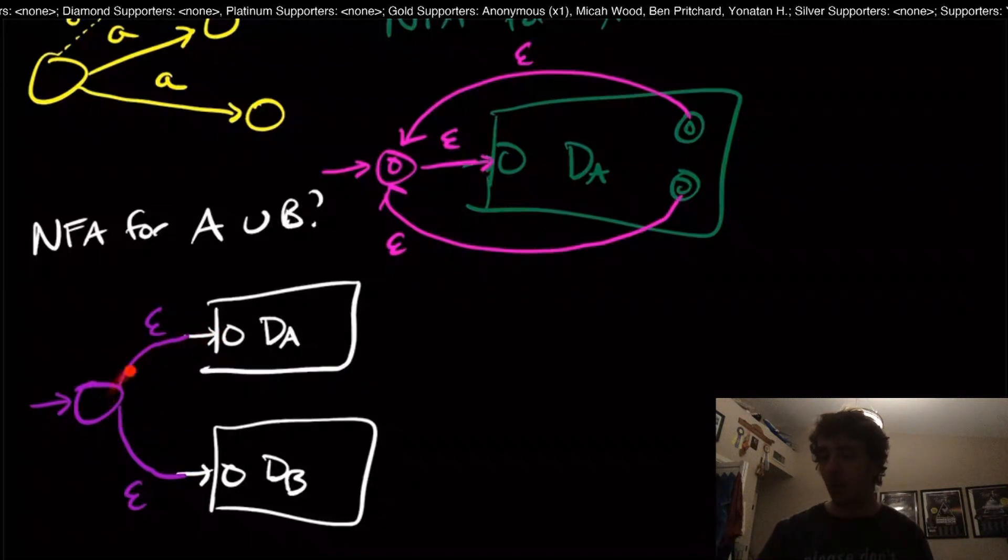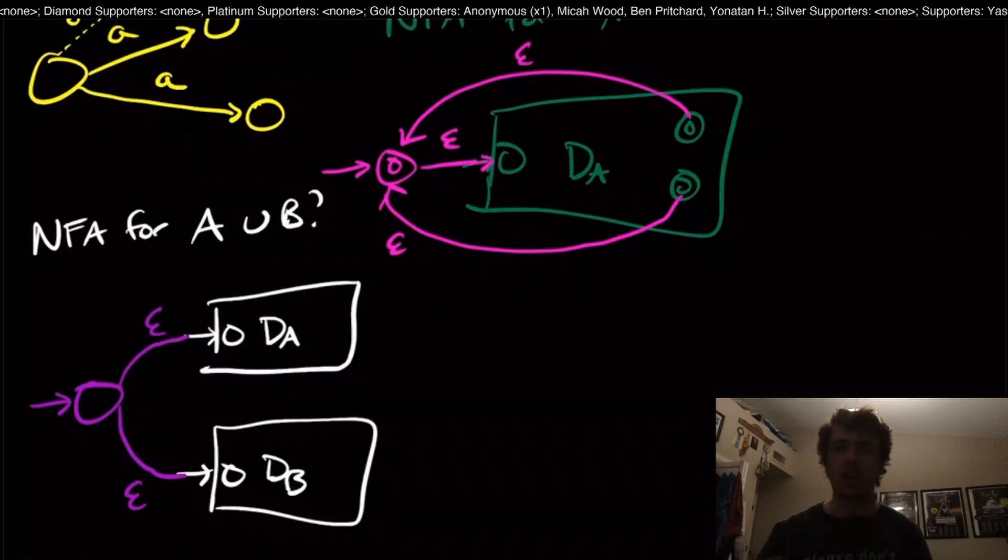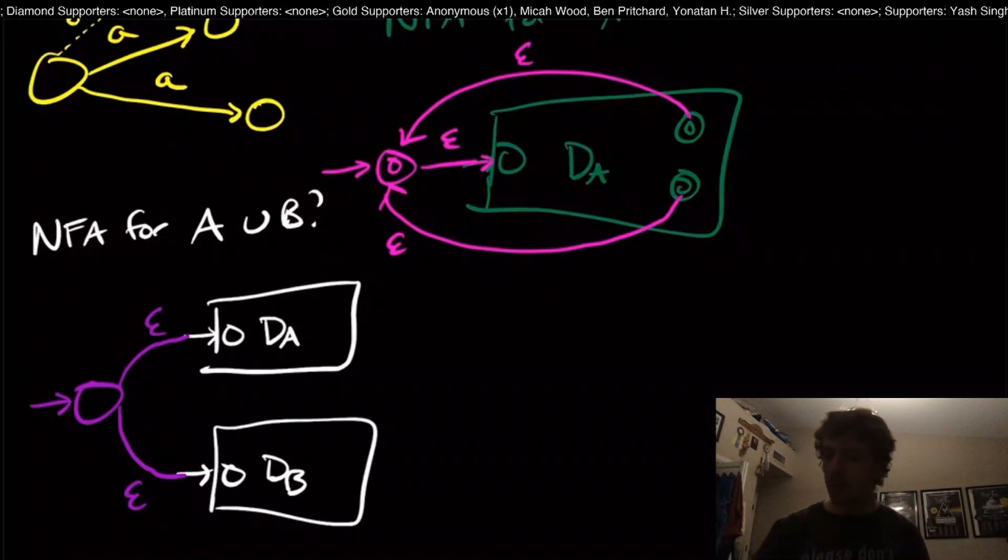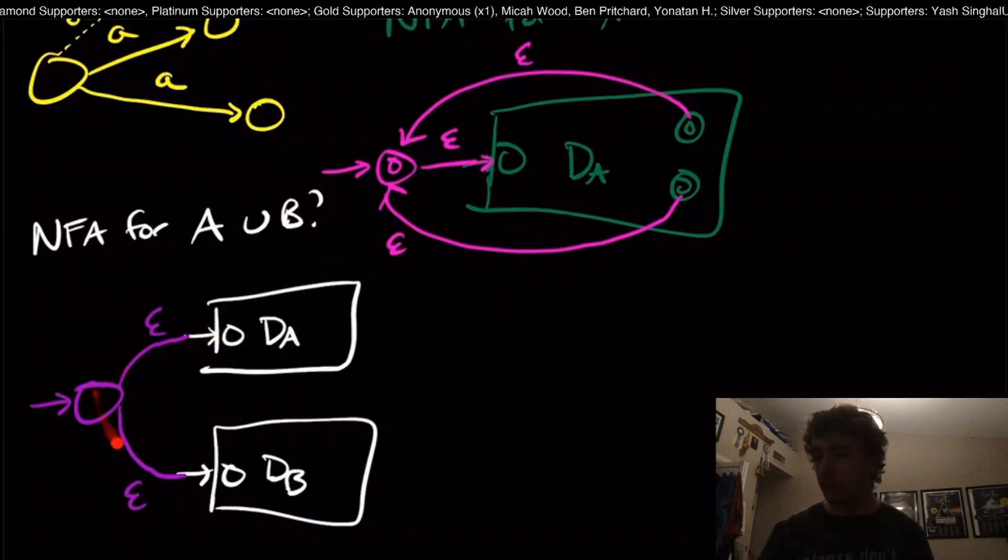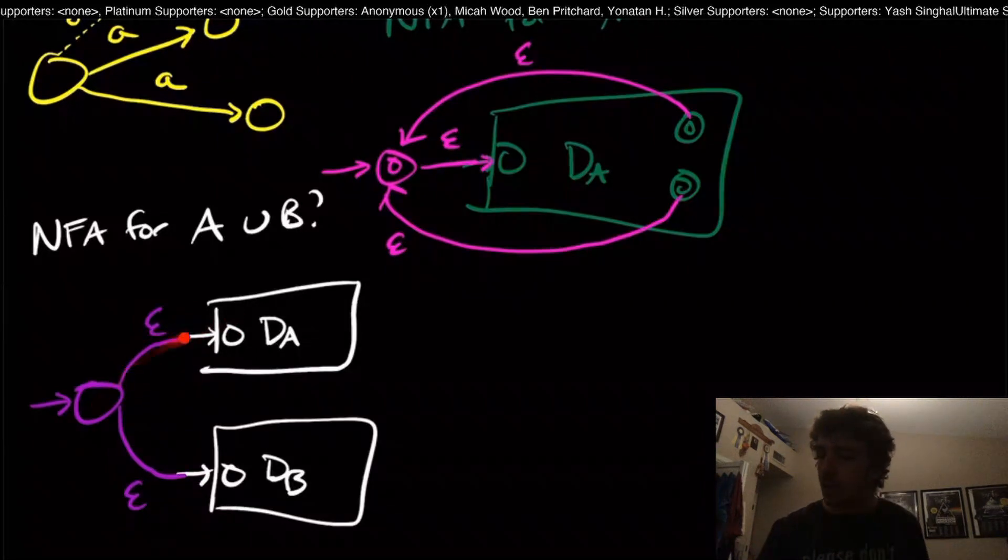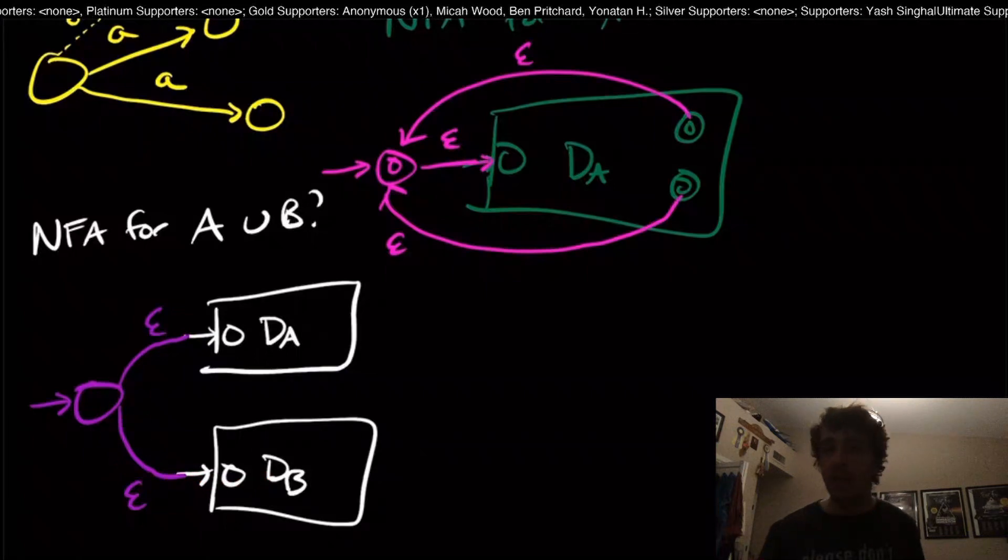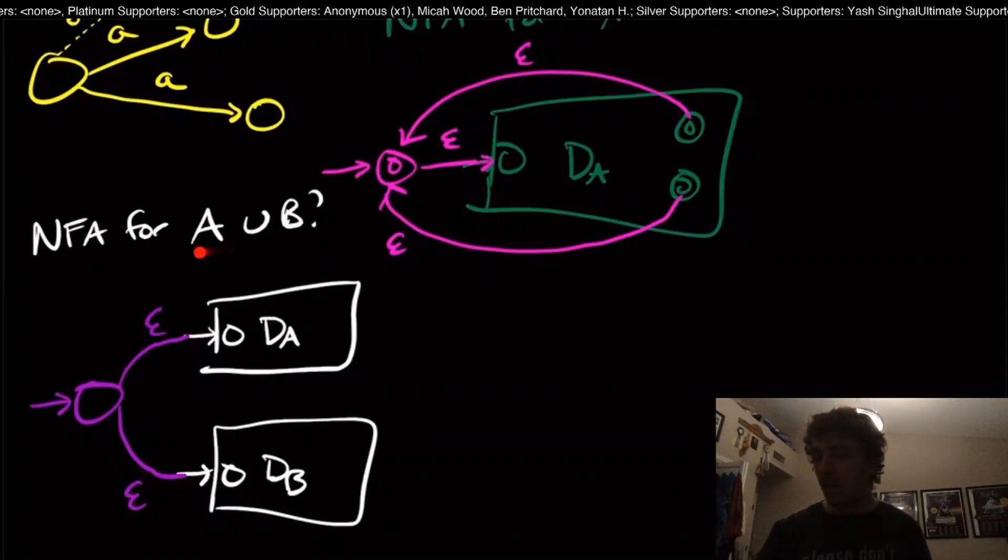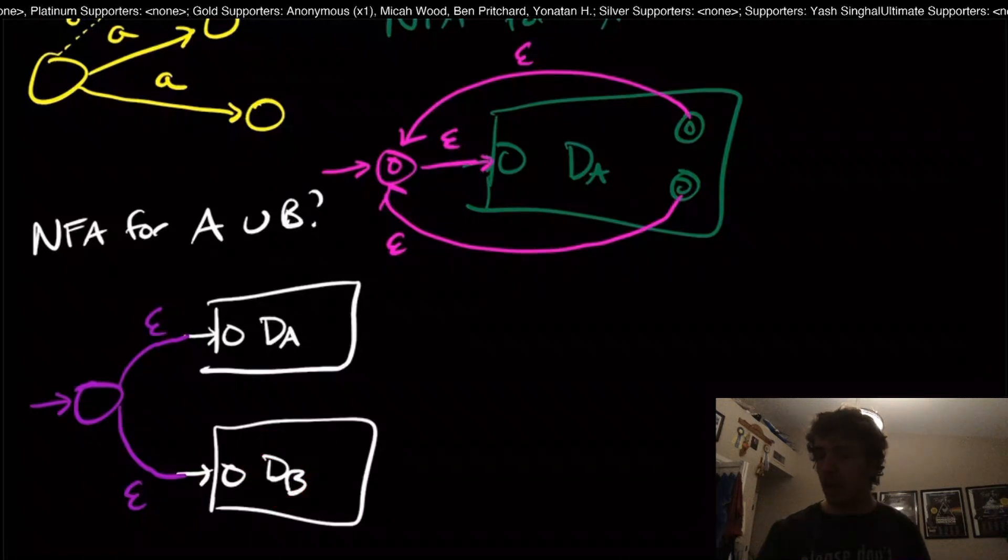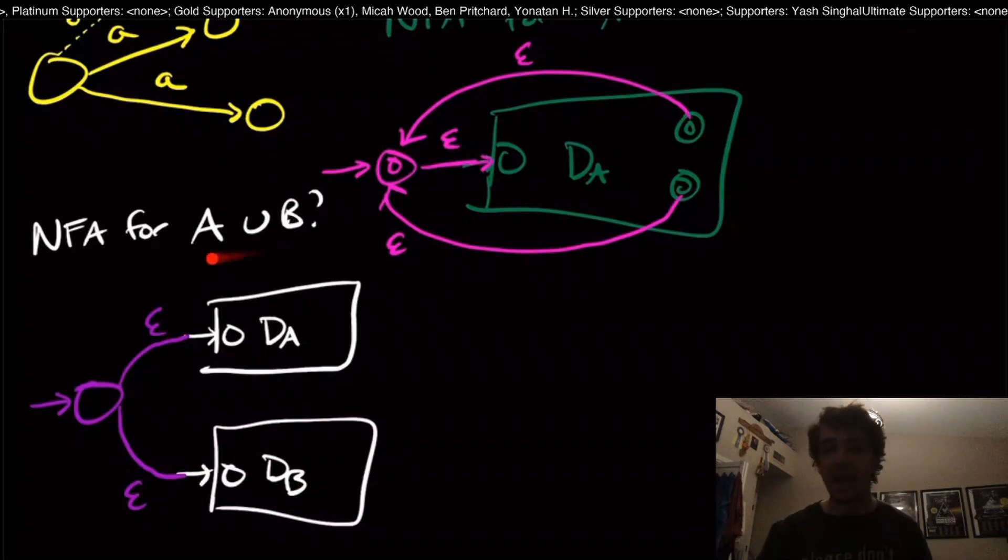Why does this work? Because if we're in this start state right here, we have an option of taking either path. By the nature of non-determinism, what we'll do is we'll choose a path that works if one of them works. I'll talk about what non-determinism truly means in the next video. Essentially, it means that we have a choice as to which way to go, and the NFA picks a choice. Therefore, we go into one of the two and then it's either accepted by the DFA D sub A or the D sub B machine, which means we do get an NFA for A union B.